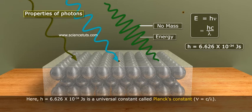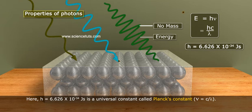Here, h = 6.626 × 10^-34 Joules is a universal constant called Planck's constant, where ν = c/λ.